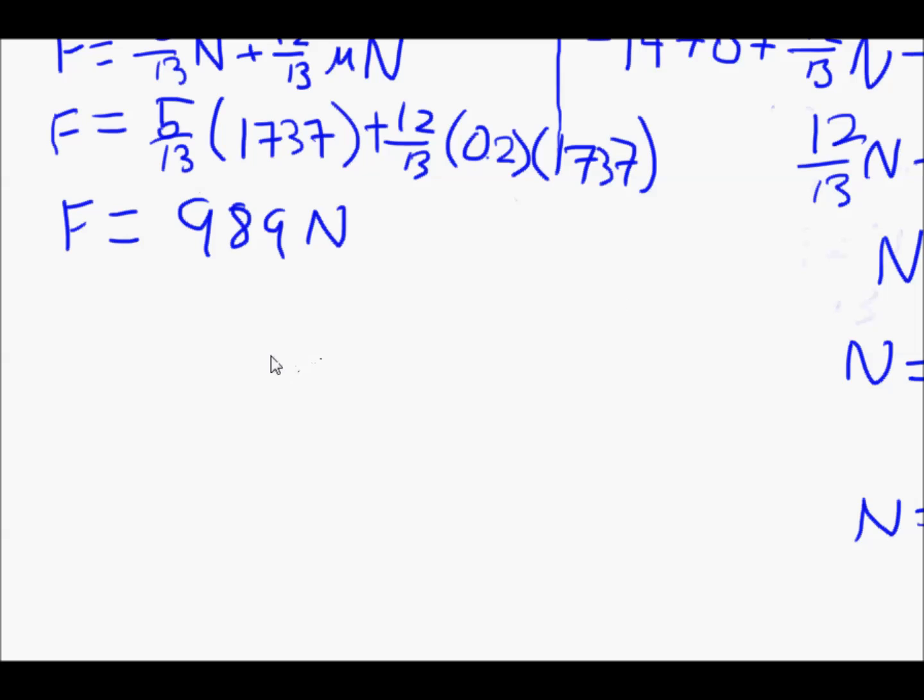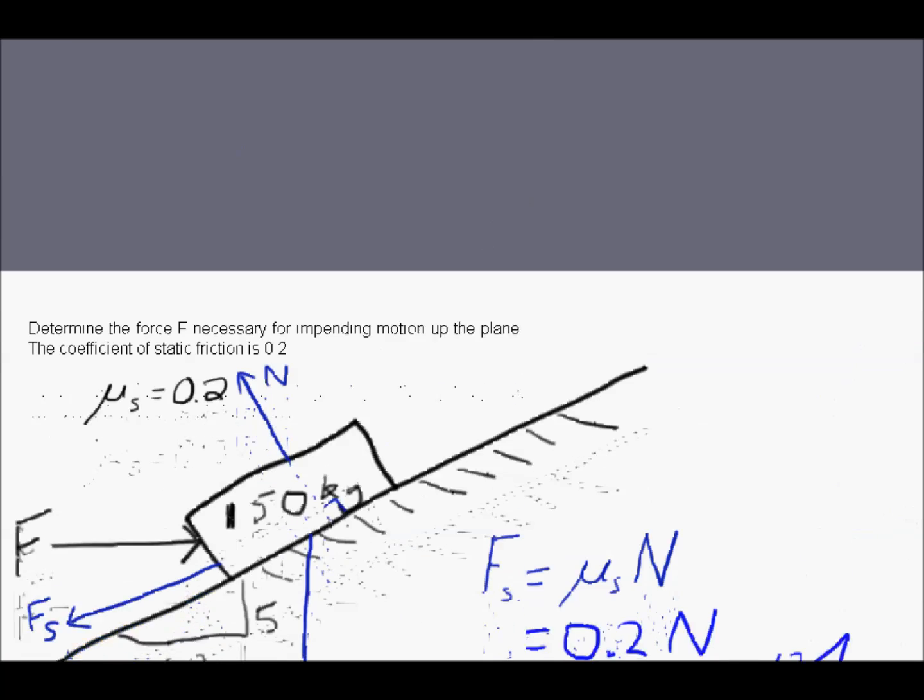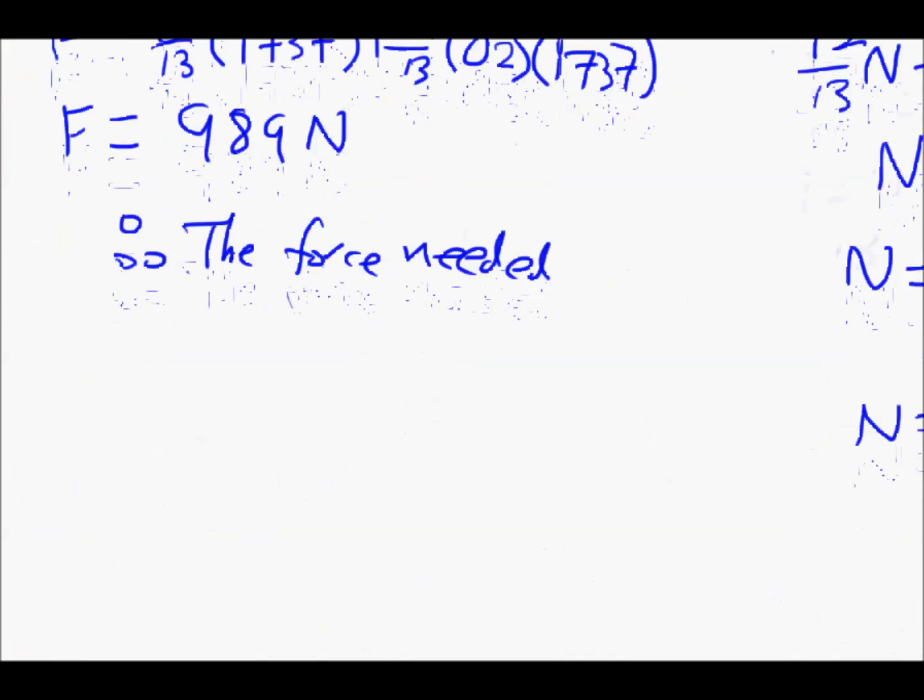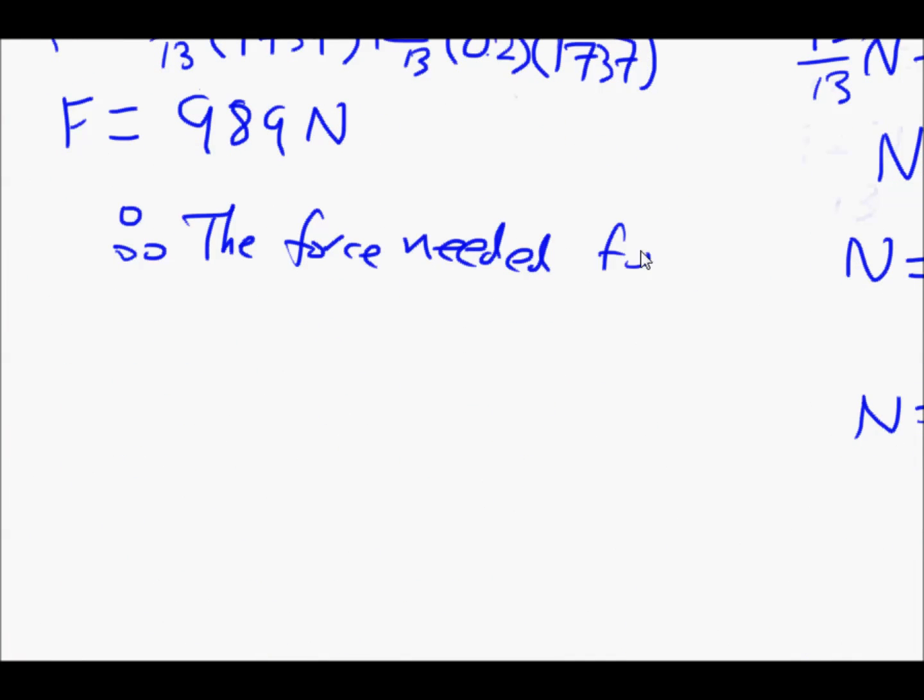That's the value for F. Therefore, the force needed, the force necessary for impending motion, in other words to overcome friction and cause motion to happen, is F equals 989 newtons. And that's the end of the question. Hope you enjoyed that.